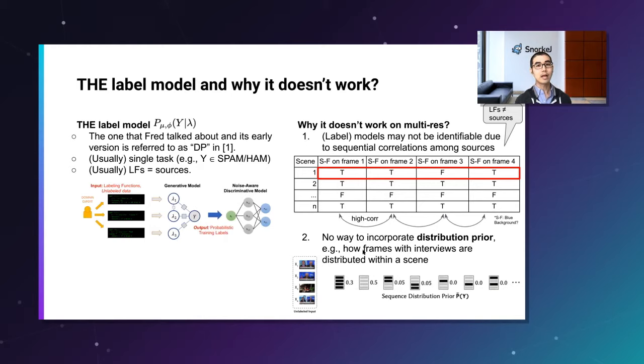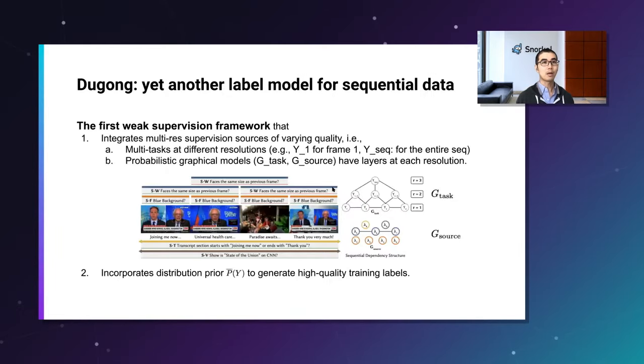Why it doesn't work on multi-resolution? The paper discusses two reasons. One is that label models may not be identifiable due to sequential correlations among sources. So this table right here, each row represents a scene and each column represents per-frame sources. If you can remember, this one right here is a transposed format of the last in the slide column representation of labels. Because a video scene tends to have the same background color throughout the scene. As a result, these sources become highly correlated, which prevents a label model from converging to a new solution.